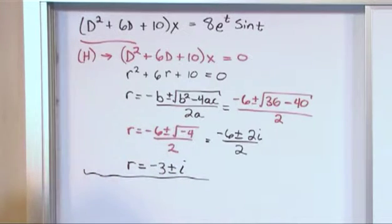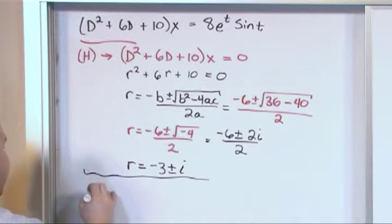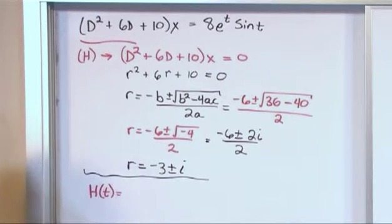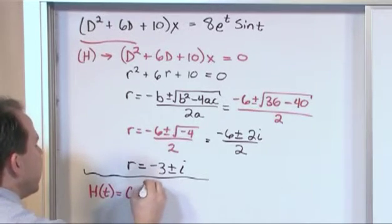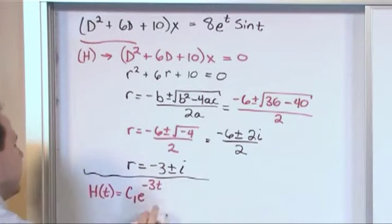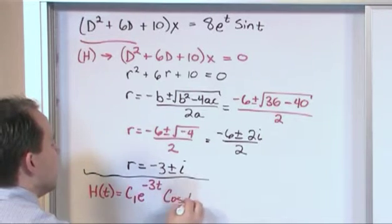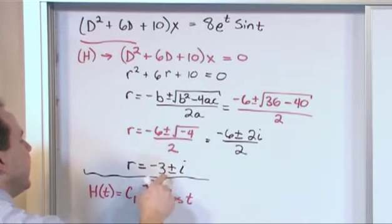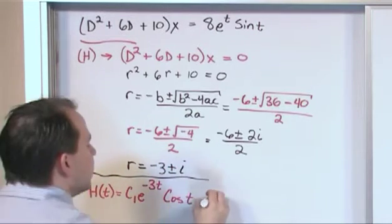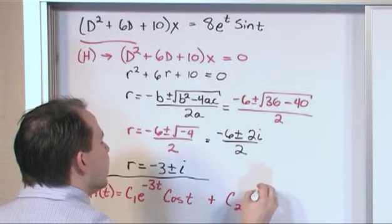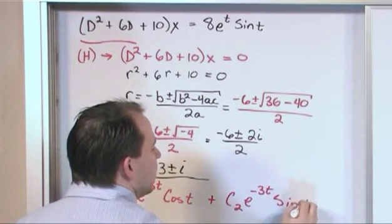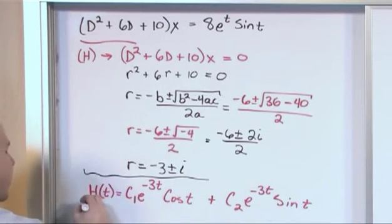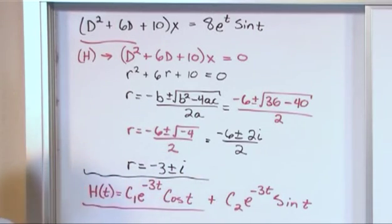So we have everything we need to construct the solution of the homogeneous version. h of t equals, looking at this, the real part's negative 3, so it's c1 e to the negative 3t times cosine of t. The 1 comes from the 1 here, and the negative 3 goes into there. Plus c2 e to the negative 3t times the sine of t. This is very important, just like all of these problems so far, this h of t.